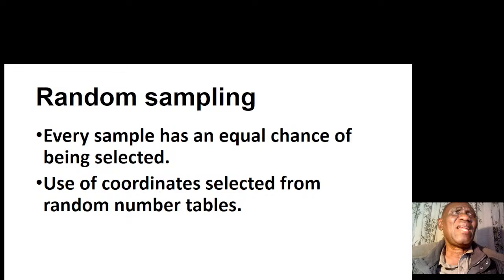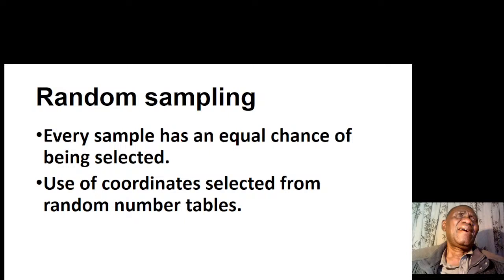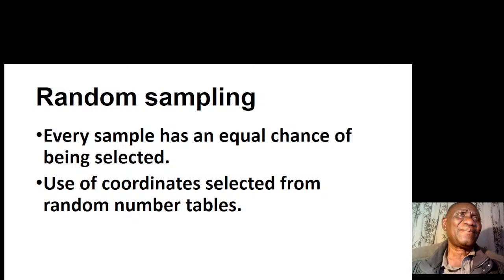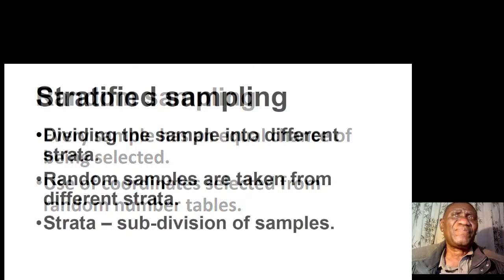For random sampling, every sample has an equal chance of being selected. We locate a certain area, label and number the areas using a map, then randomly select the areas using those numbers so that we sample a representative proportion of the area. We can also use coordinates selected from random number tables.